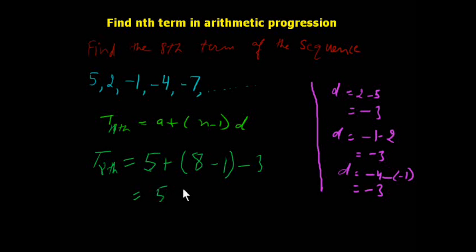5 plus 8 minus 1 equals 7 into minus 3. This is 5 plus minus minus equals minus. 5 minus 16, the 8th term will be minus 16.